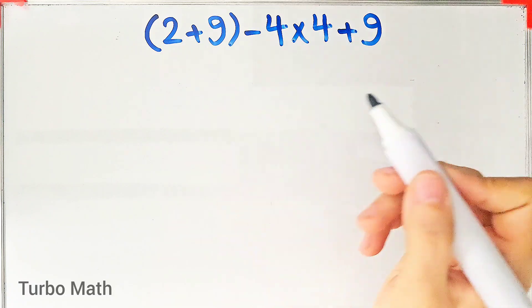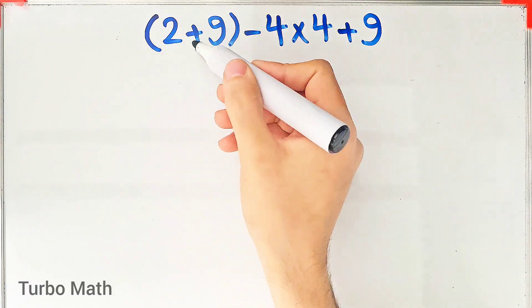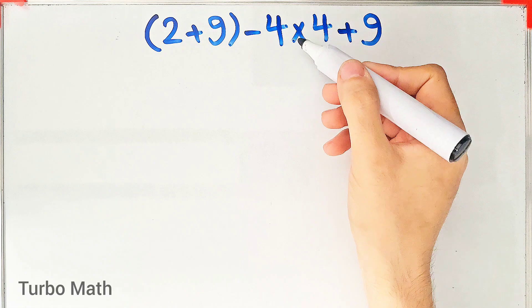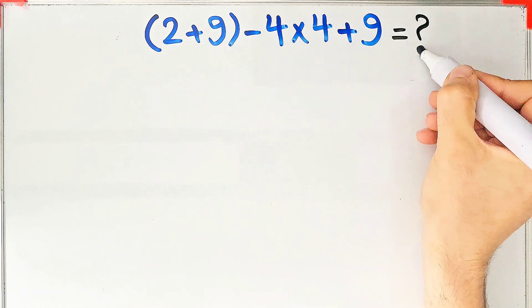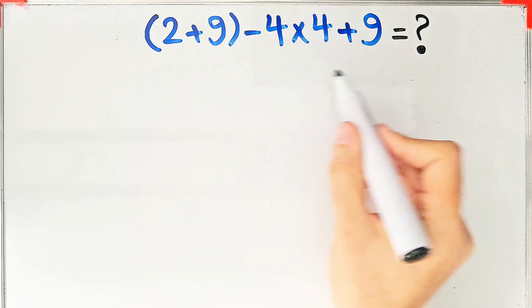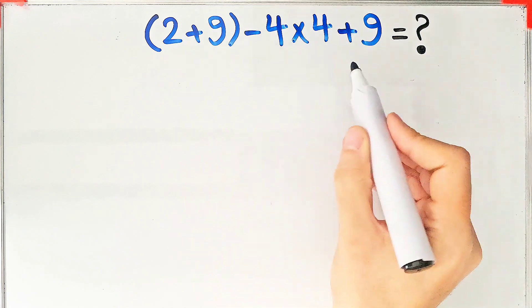Hi friends, welcome to Turbo Mass Channel. 2 plus 9, then minus 4 times 4 plus 9. What is the answer to this question? Can you solve it? Many people when they see this question don't know...